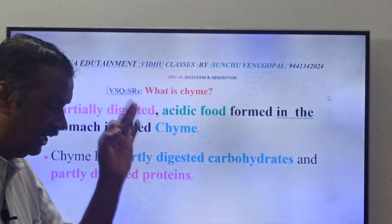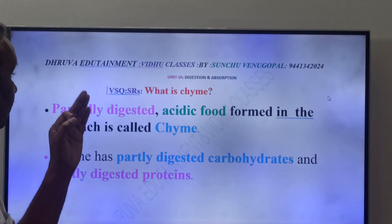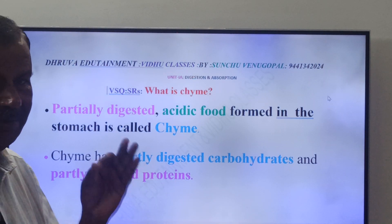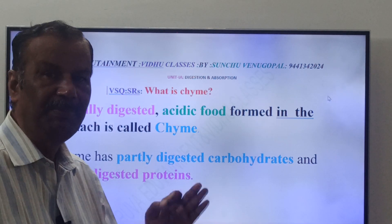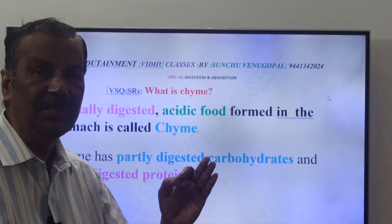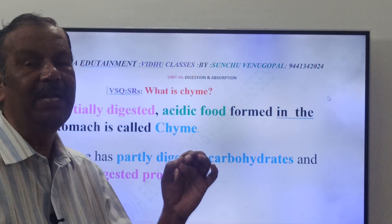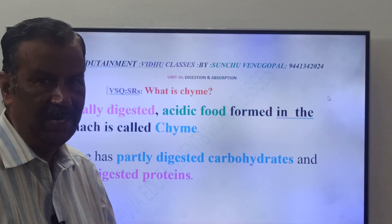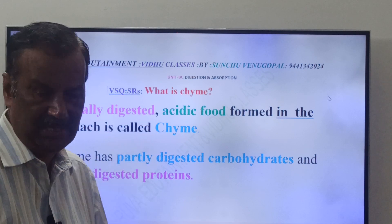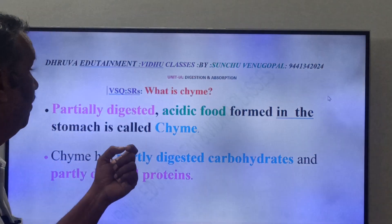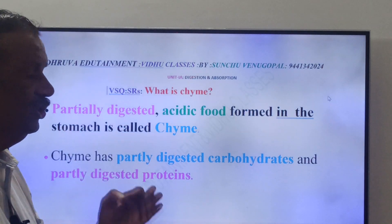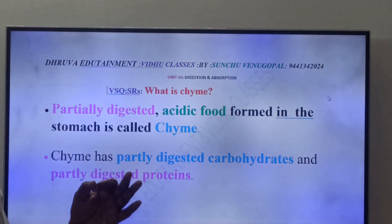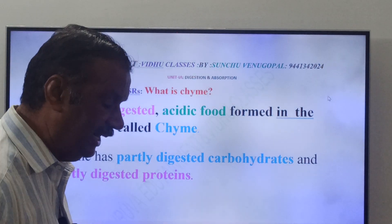Friends, you have to write these four lines. Once again, what is Chyme? Partially digested acidic food formed in the stomach is called Chyme. Chyme has partially digested carbohydrates and partially digested proteins.